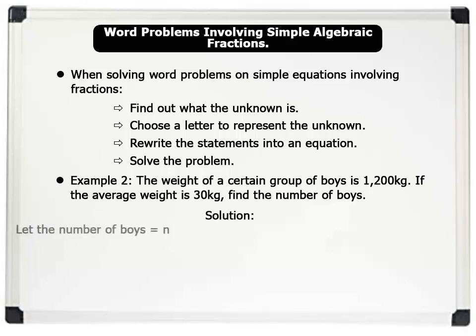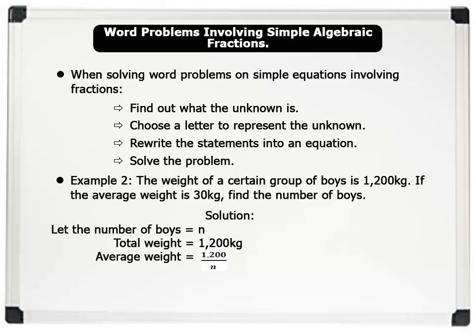Solution: Let the number of boys equals n. Total weight equals 1200 kilograms. Average weight equals 1200 over n. So, 30 equals 1200 over n.